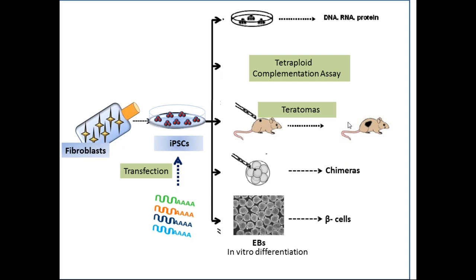Chimera formation is the gold standard assay, but it cannot be performed in humans — mice must be used. By definition, pluripotent stem cells are undifferentiated cells that under certain physiological or experimental conditions can be induced to become cells with specialized functions. So if your lab's mandate is to form beta cells or cardiac cells, you can navigate your iPSCs toward those lineages. If they are bona fide iPSCs, you will be able to get those cells.